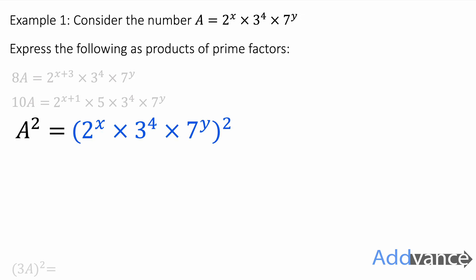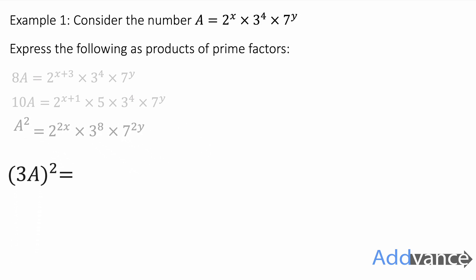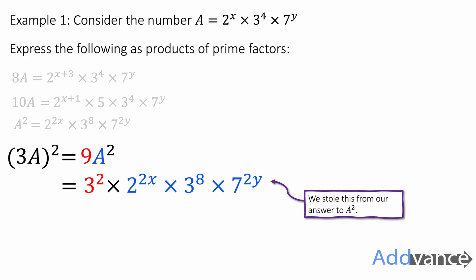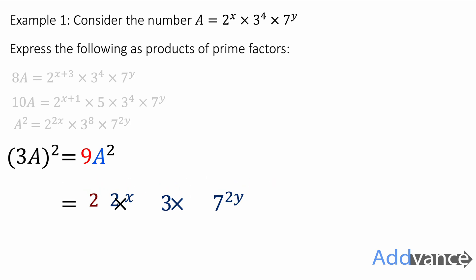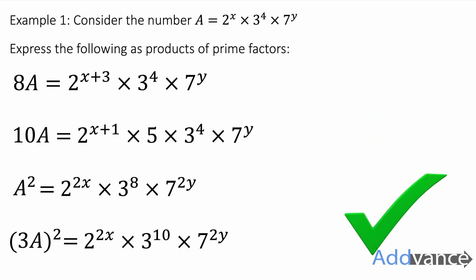For a squared, we're going to write our number squared. When doing a power to a power, we multiply the powers. So we get 2 to the power of 2x, 3 to the power of 8 (because 4 times 2), and 7 to the power of 2y. Now for (3a) squared, that is the same as 9a squared because the 3 gets squared as it's inside the brackets. That gives us 3 squared times 2 to the power of 2x times 3 to the power of 8 times 7 to the power of 2y. We combine the powers of 3 by adding them to get 3 to the power of 10. We have now written all these numbers as products of prime factors.